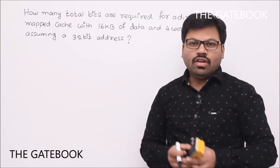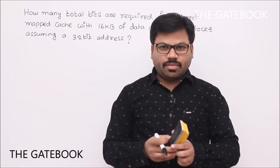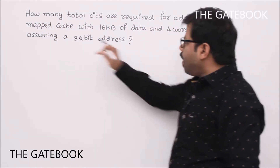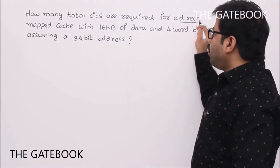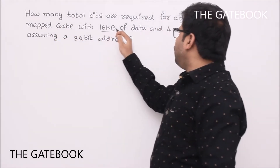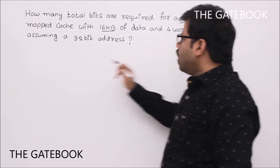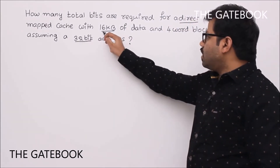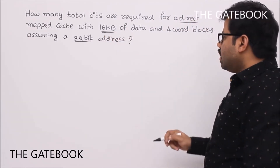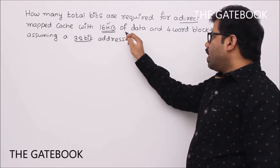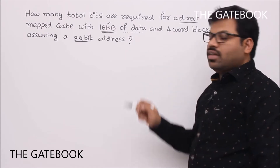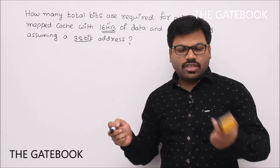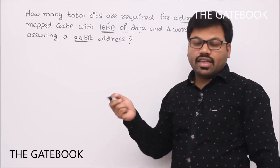We'll see some problems related to mapping techniques to understand them clearly. The first problem: how many total bits are required for a direct mapped cache with 16 KB of data and four-word blocks, assuming a 32-bit address? The address size is 32-bit and cache size is 16 KB. Since they mentioned 16 KB of data, tag bits and valid bits are not included in that 16 KB.